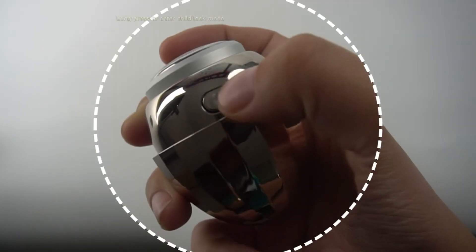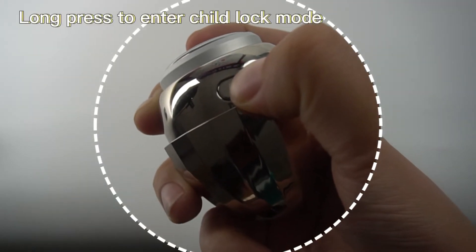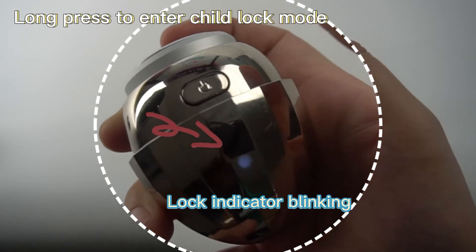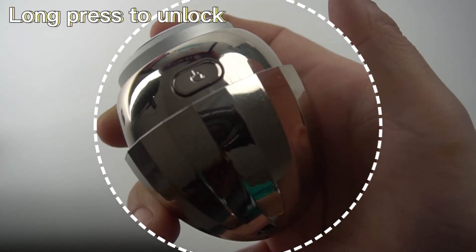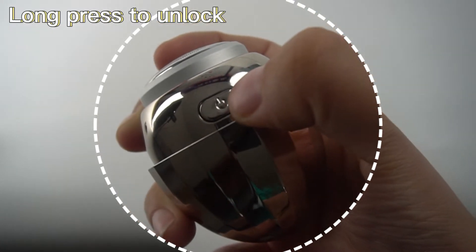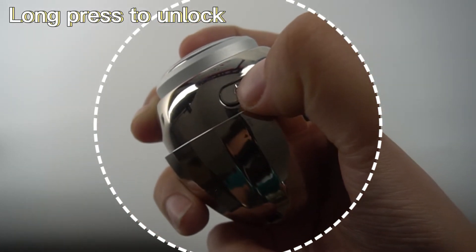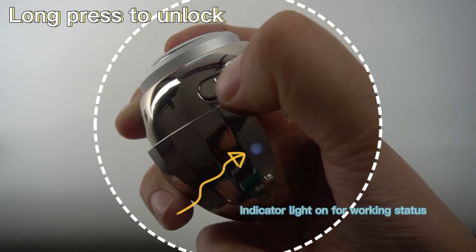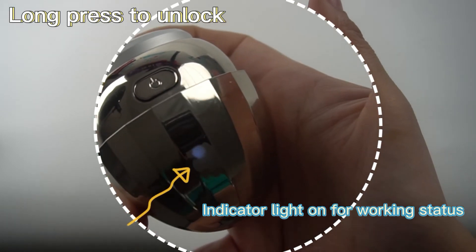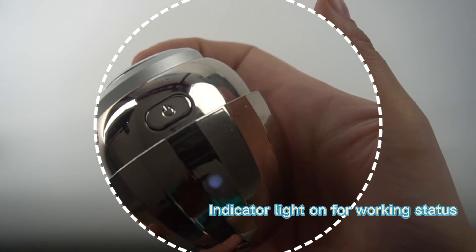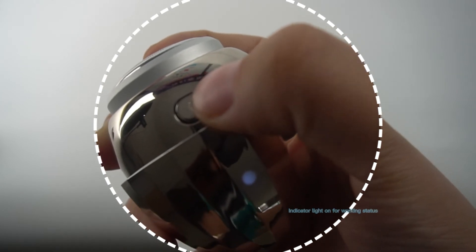Equipped with child lock mode. Press and hold for 3 seconds until the light flashes to indicate lock. Press and hold for 3 seconds until the indicator light illuminates to indicate unlocking. Safer from injury to children.